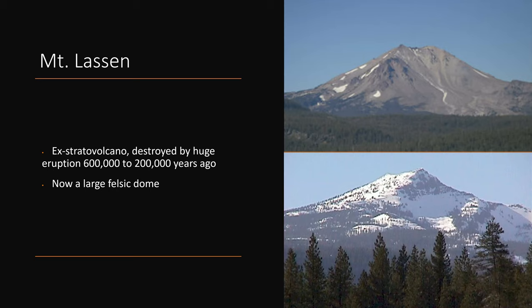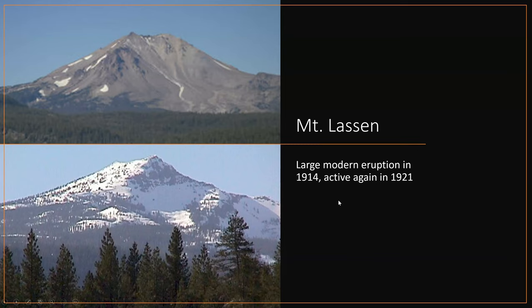Mount Lassen last erupted in 1915 and was active again in 1921. It is an ex-stratovolcano — it was destroyed by a huge eruption 600,000 to 200,000 years ago, and now it is mostly a felsic dome.